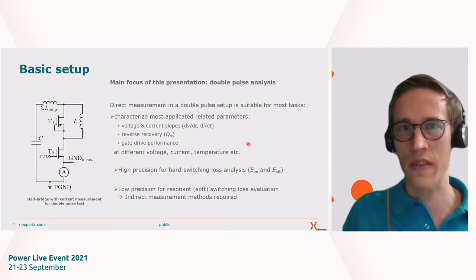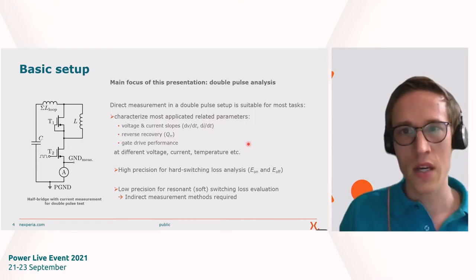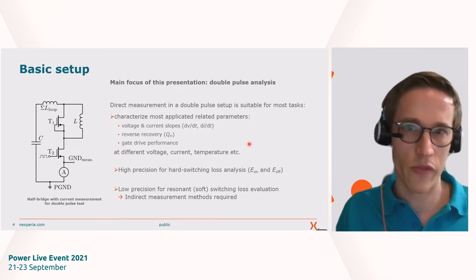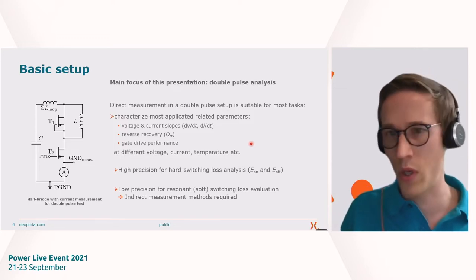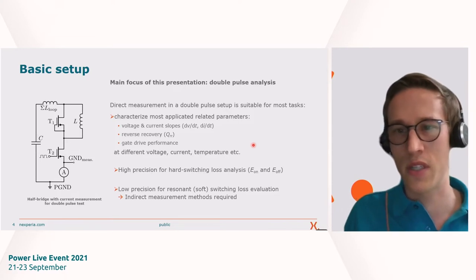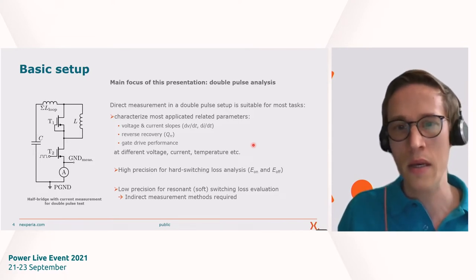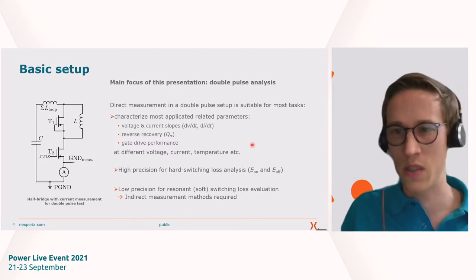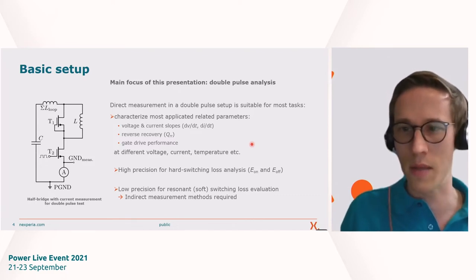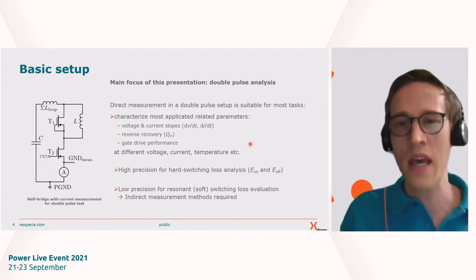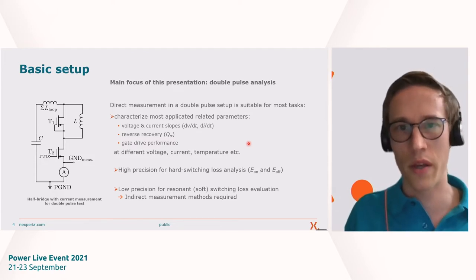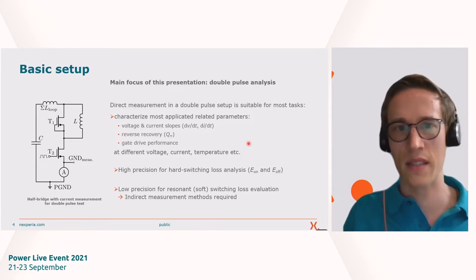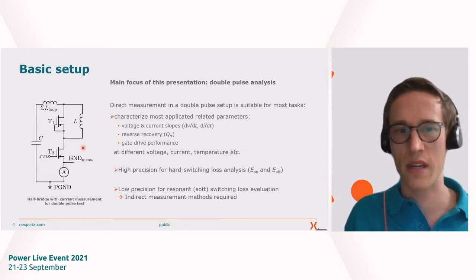Now for the basic setup, this presentation is mostly focusing on the double pulse analysis, which is a direct measurement to evaluate most application related parameters such as voltage and current slopes, reverse recovery, gate drive performance, for example at different voltage, current and temperature. And it has a higher precision for hard switching loss analysis. But when we do resonant switching and want to analyze this, it's not the best solution. For this case, indirect measurements are usually required. Why is that the case?